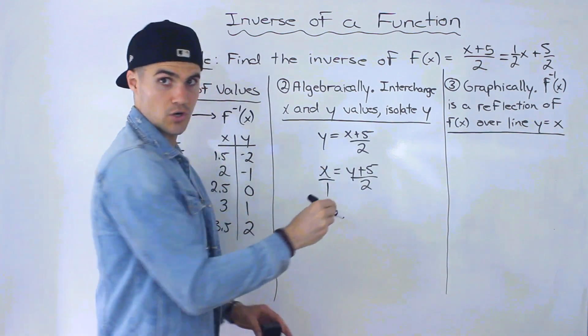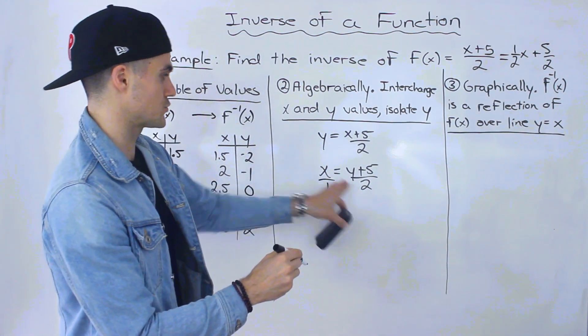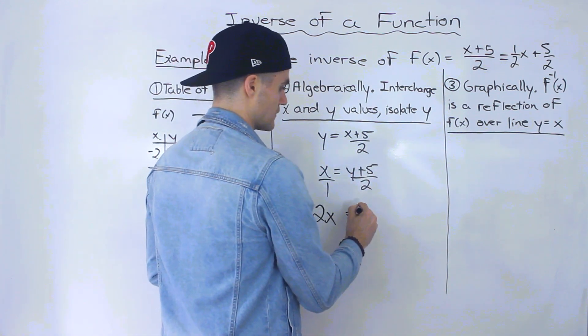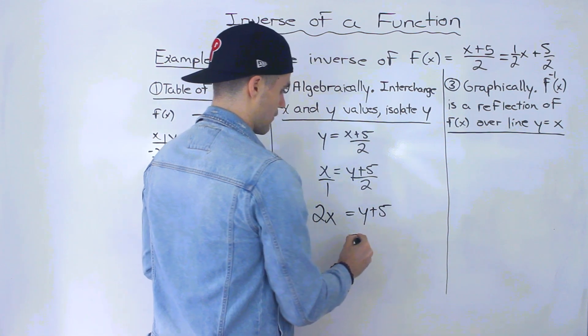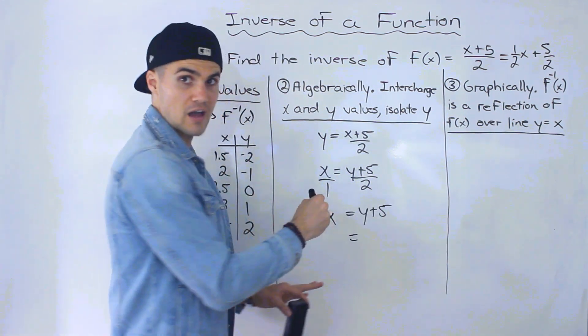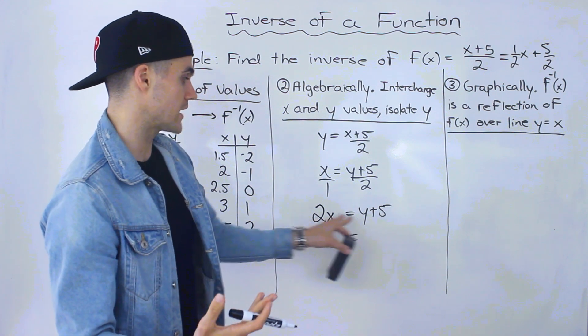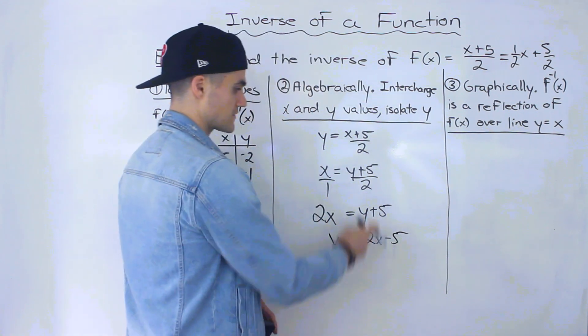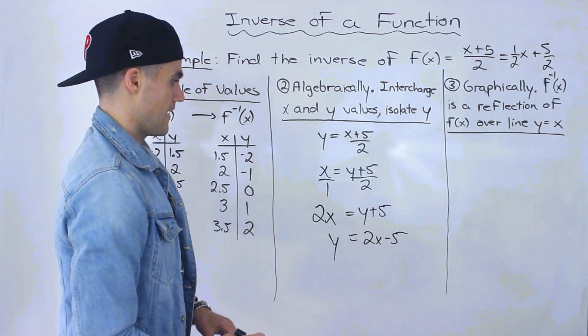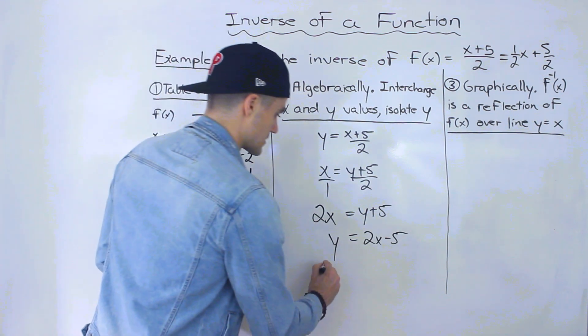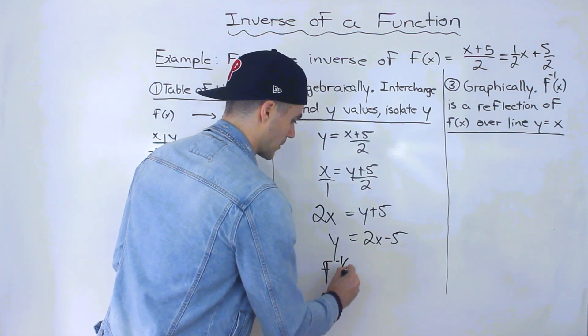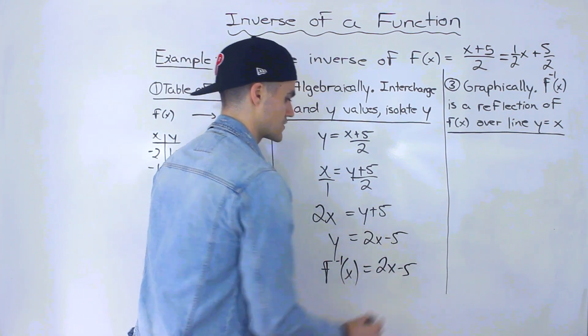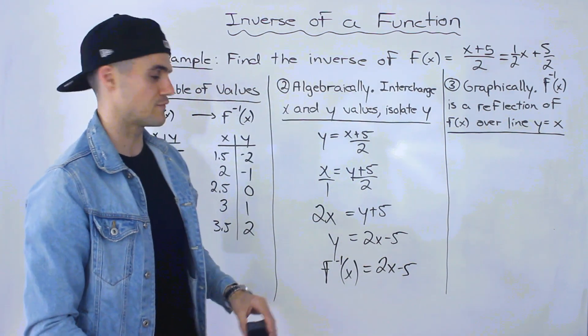So this would be over 1. Now let's cross multiply. We're trying to isolate for this y here. So 2 times x is 2x, and then 1 times y plus 5 is just y plus 5. And then if we isolate for the y, we would bring the 5 over. So we'd have y equals 2x minus 5. And we can leave it like this, proper format. Remember, that's the inverse notation. So it's equal to 2x minus 5. That is the inverse of that function. Notice it's a line as well.